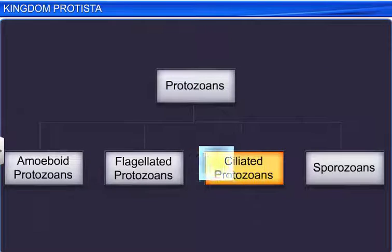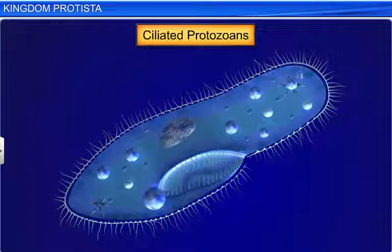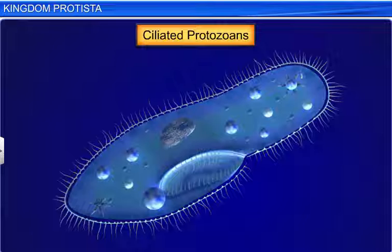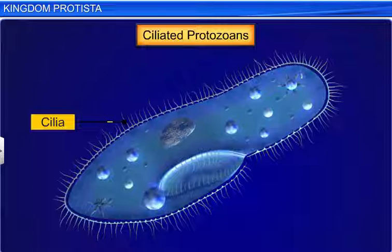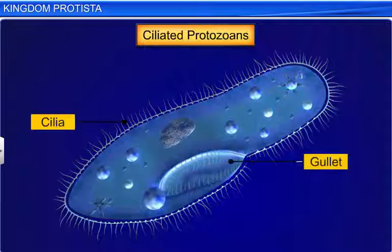Ciliated protozoans, like Paramecium, can be found at almost all places where there is water. They are very active since they possess thousands of cilia. It is the coordinated movement of these cilia that steers the water containing their food into their gullet — a cavity that opens to the outside of the cell surface.